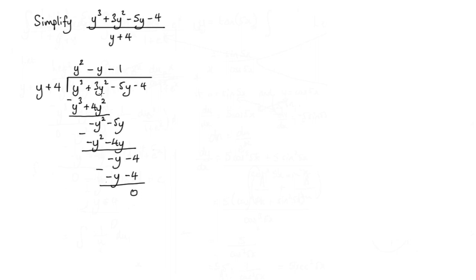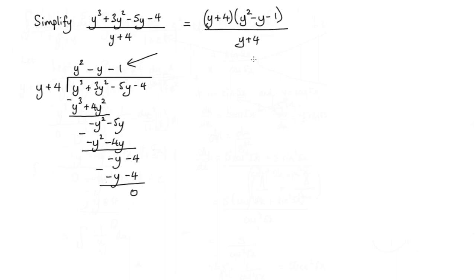So what does this mean? It means that the numerator can be split into y plus 4 multiplied by y squared minus y minus 1, and that is all over y plus 4. The y plus 4 cancels with the y plus 4, so we're left with y squared minus y minus 1. That is our simplified expression.